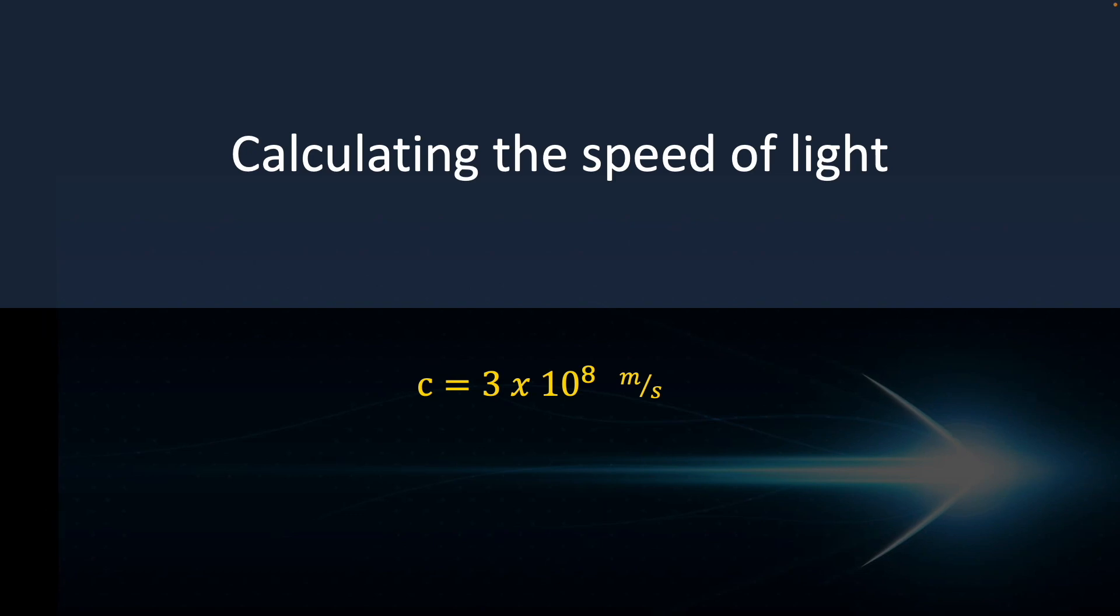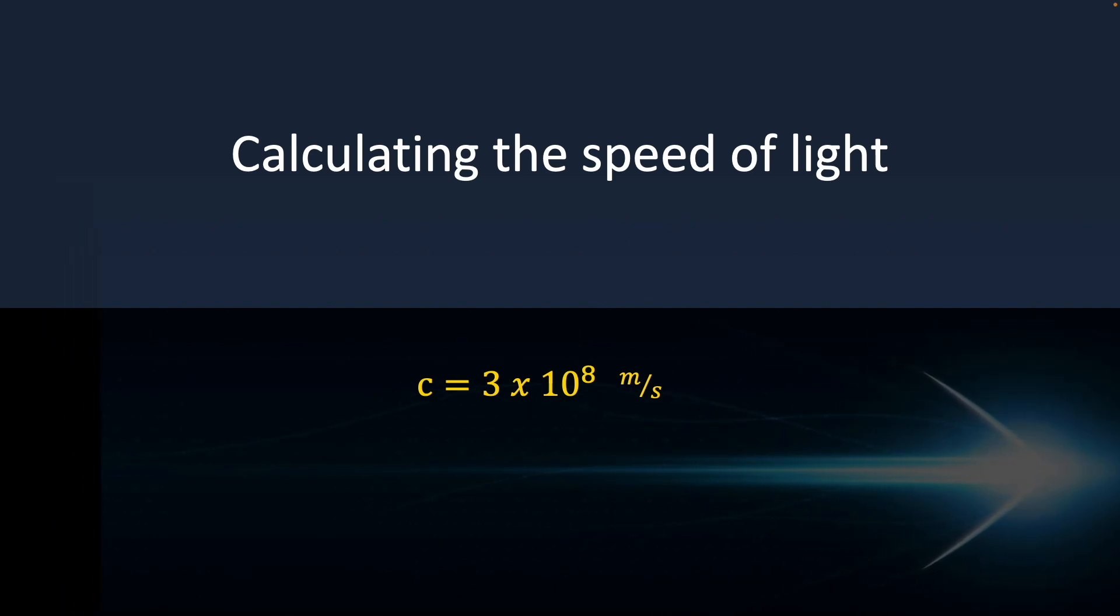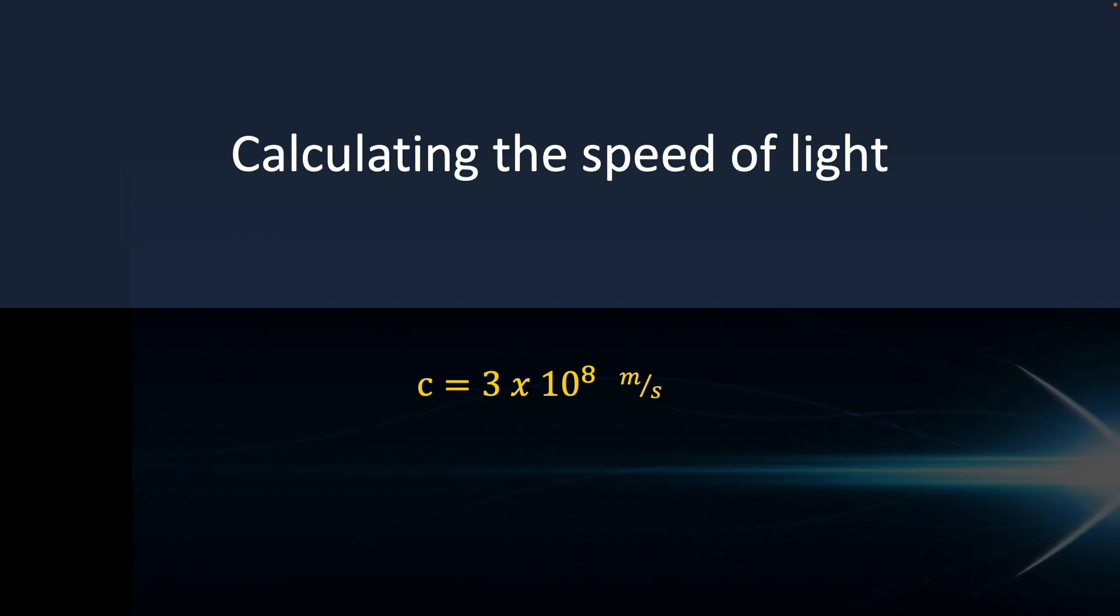For the last section, let's calculate the speed of light. To do so, we need to assume there is a medium, and we're going to use the equation for wave speed in one dimension, which is how photons, or light waves travel.